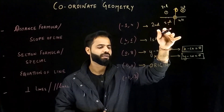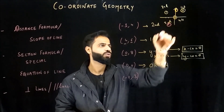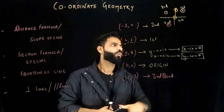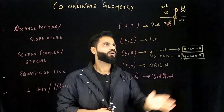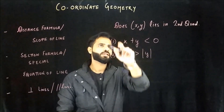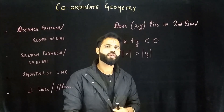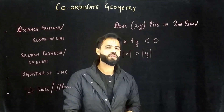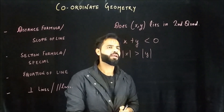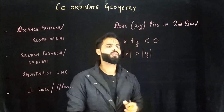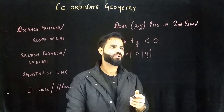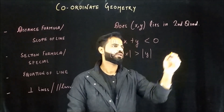Minus 2 comma minus 3 goes to the third quadrant. I hope this is clear. Now we can go ahead and attempt a GMAT-like question on this Cartesian or coordinate system. The question says: does x comma y lie in the second quadrant? Statement 1 says x plus y is less than zero, and Statement 2 says the magnitude of x is greater than the magnitude of y.